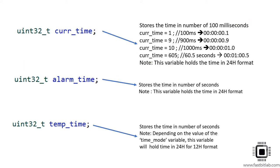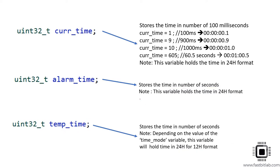The alarm_time variable stores the time in number of seconds, because we manipulate alarm time in terms of hours, minutes, and seconds — we don't care about the sub-second field. It holds time in 24-hour format. The temporary time variable also stores time in number of seconds since we only modify hours, minutes, and seconds. Depending on the time_mode variable, it may hold time in 24-hour or 12-hour format. We'll see how to use these variables while coding.